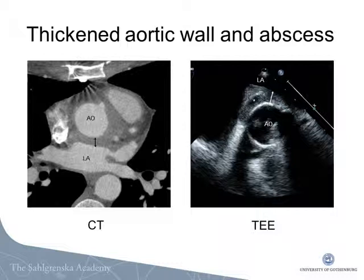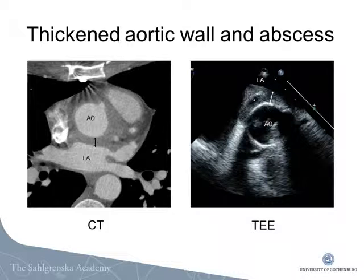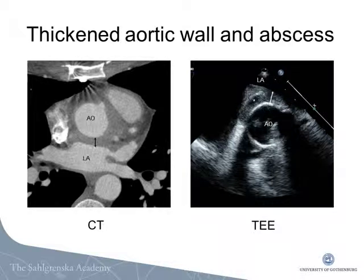This shows the abscess that was detected only with TEE. The TEE image to the right shows a small abscess cavity in the aortic wall marked with an asterisk. The CT image to the left shows a thickened aortic wall indicating infection, but the abscess cavity could not be detected.